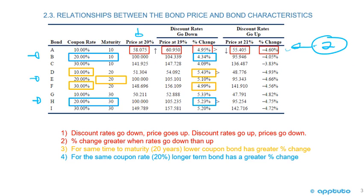The next rule: for the same time to maturity, a lower coupon bond has a greater percentage change than a higher coupon bond. Looking at the gold boxes for 20-year maturity bonds: starting with the price at 20% and moving to 19%, the price change for the lower coupon bond (10%) was 5.43%, and for the higher coupon bond (30%) it was 4.99%. So for the same time to maturity, a lower coupon bond has a greater percentage change than a higher coupon bond.